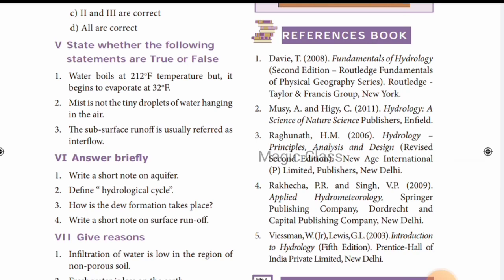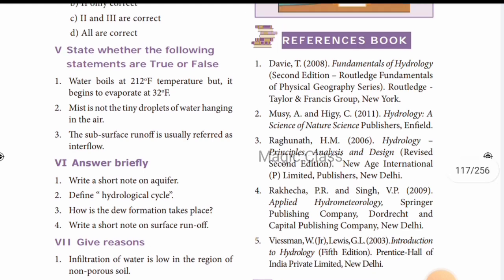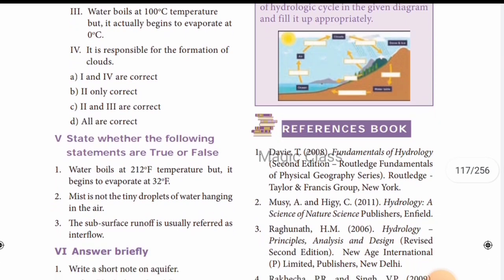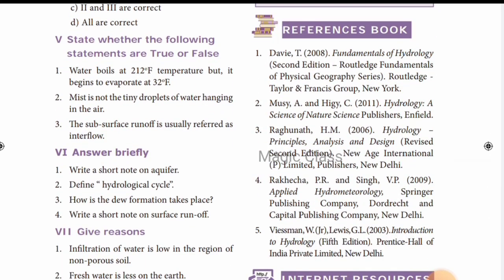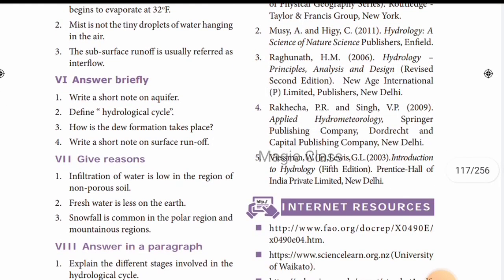True or False: Water boils at 212 degrees Fahrenheit but begins to evaporate at 32 degrees Fahrenheit — answer is true. Second: mist is not the tiny droplets of water hanging in the air — that is false; mist is tiny droplets of water hanging in the air. Third: the subsurface runoff is usually referred to as interflow — that is true.